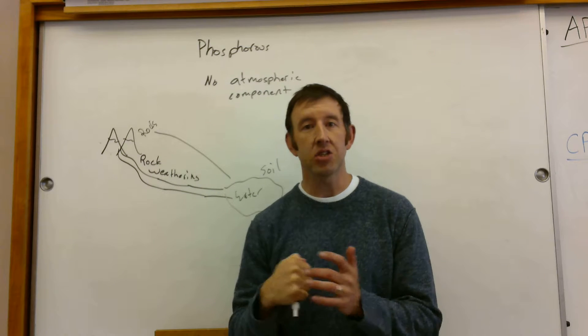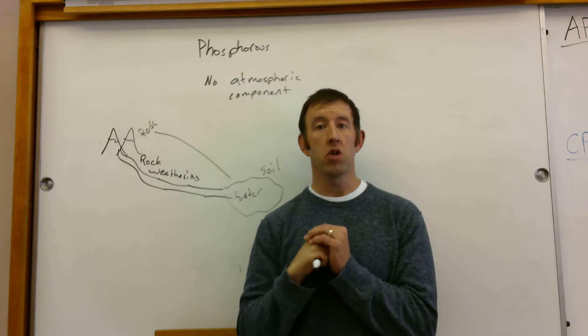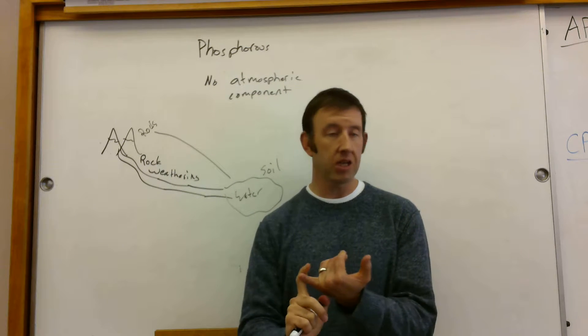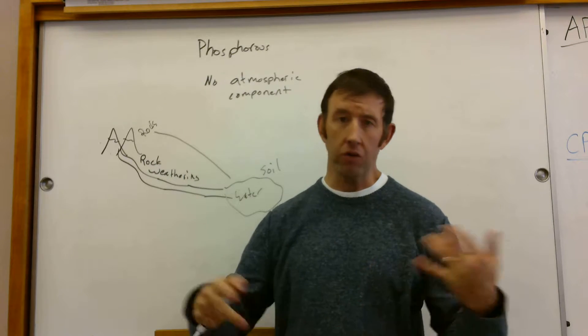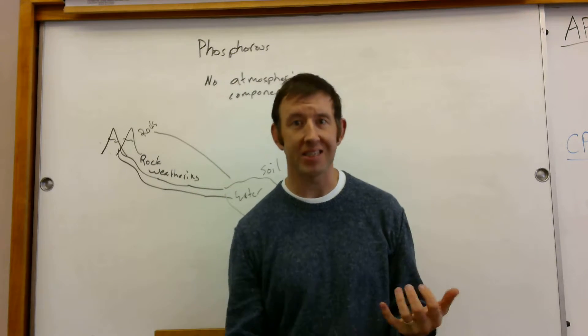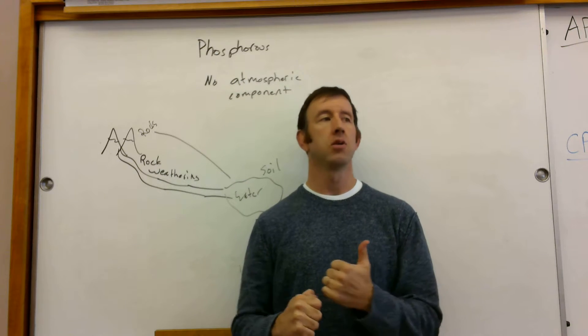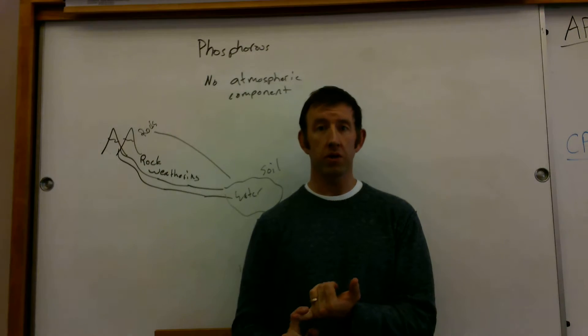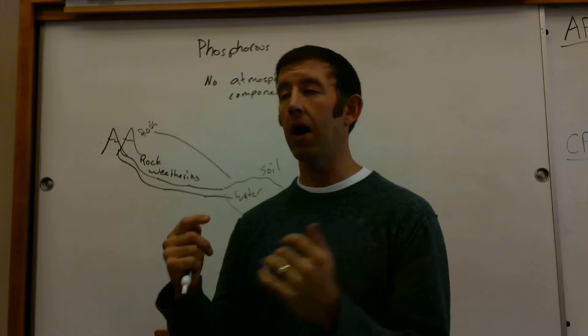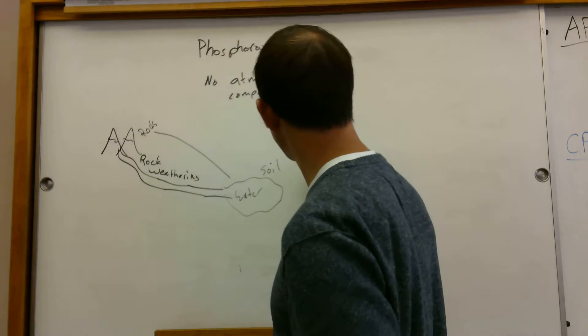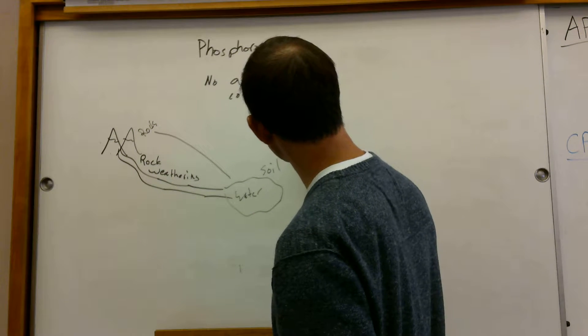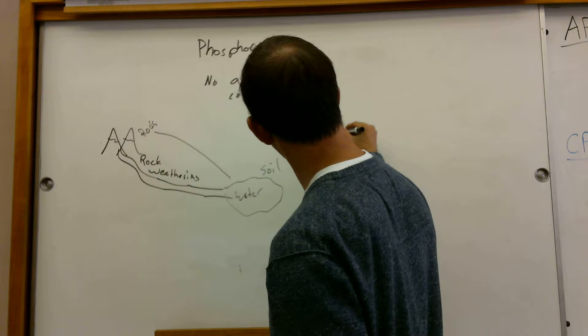So phosphorus enters ecosystems through a really slow erosion process. We have phosphate-containing minerals, rainwater, weathering processes erode that rock away. That's how the phosphorus gets into the water in the first place and into biology. Now what's in the water in the soil, we've got our biomass.